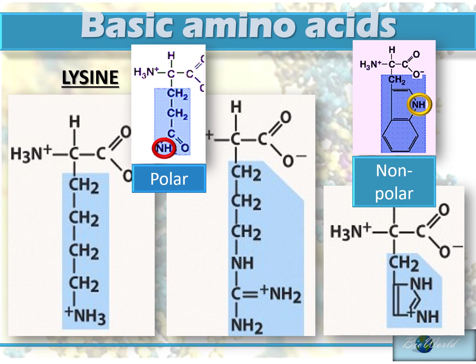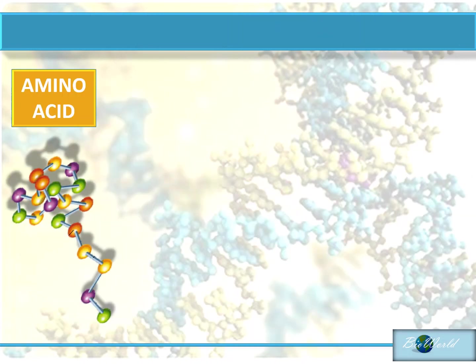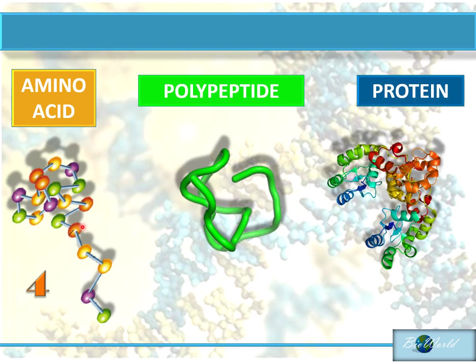So I have introduced all 20 amino acids and highlighted the differences in their side chains. Now you know why these amino acids are colored differently — there are only four colors: green, purple, yellow and orange, representing the four groups based on side chains. In my next video I'll talk about how amino acids become polypeptides and proteins. Until then, bye-bye.